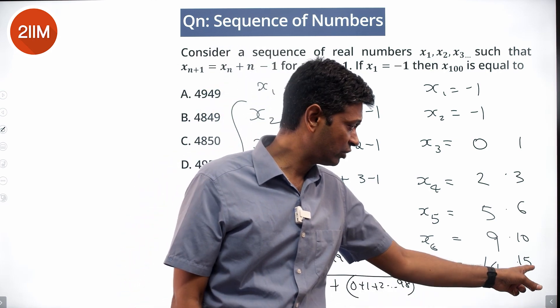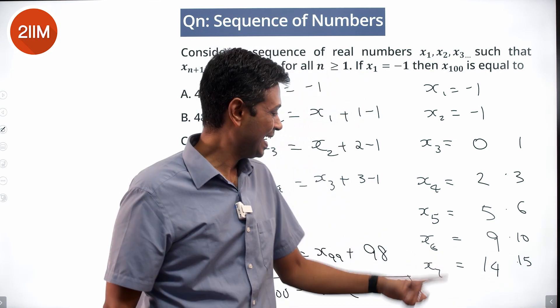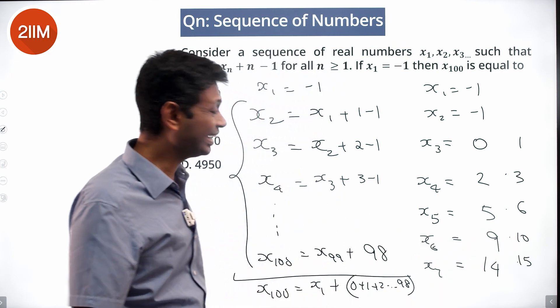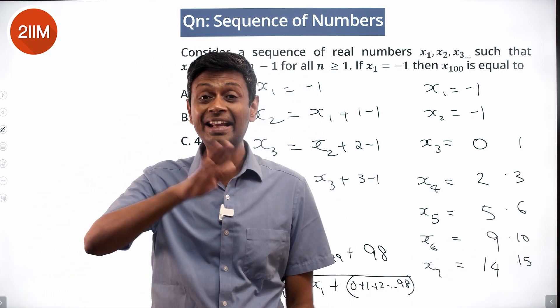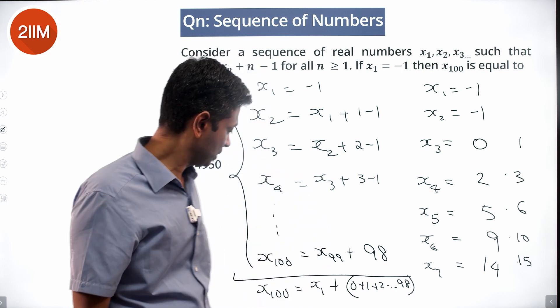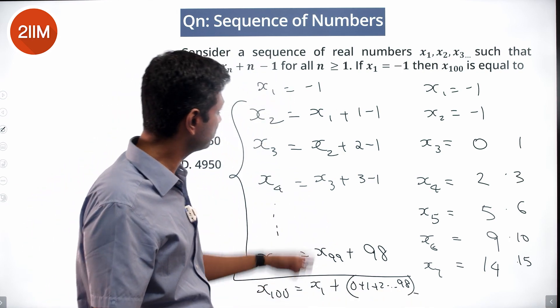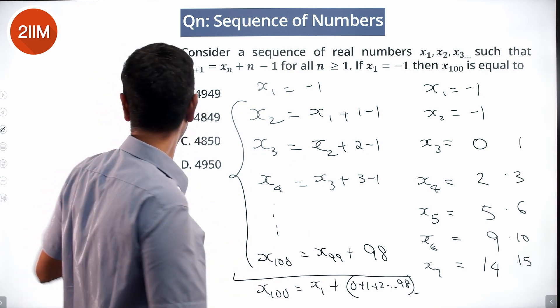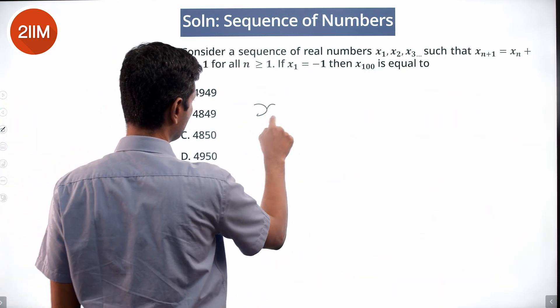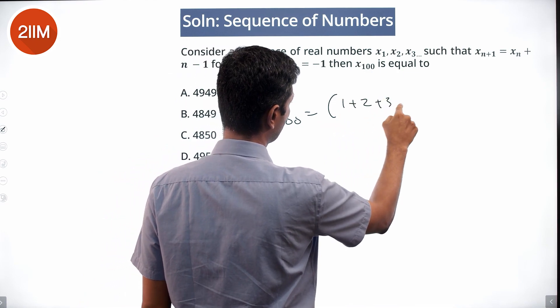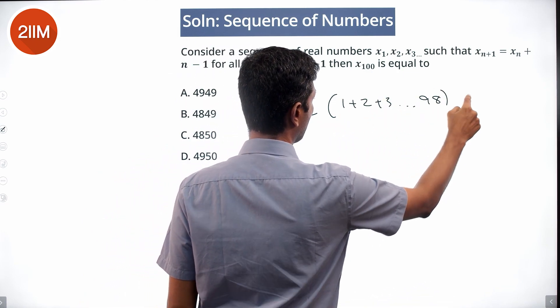x7 is the sum of 5 natural numbers minus 1, x6 is the sum of 4 natural numbers minus 1, so x100 would be the sum of 98 natural numbers plus x1, which is -1. Therefore, x100 equals 1 + 2 + 3 all the way till 98 minus 1.